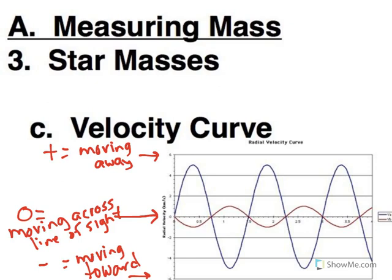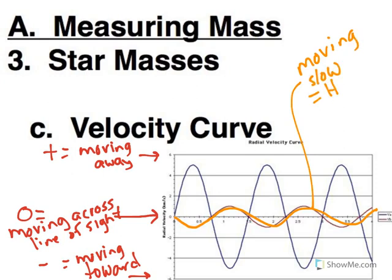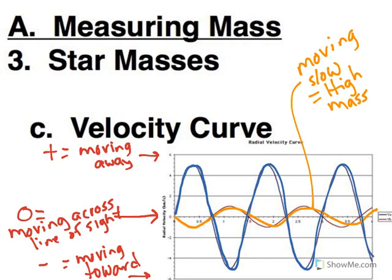Negative is moving toward. What the two curves are showing us are the two stars and their motion. So this curve is showing us a star that's moving slowly. So we know that's the high mass star. This curve goes much farther above and below zero. So these peak values are the speed, and that's much faster. So moving fast we know is the low mass star.